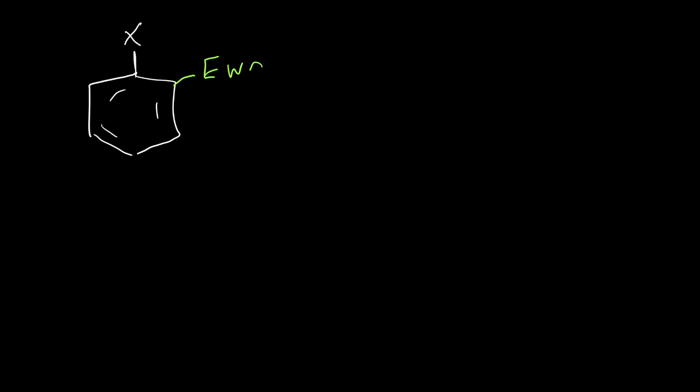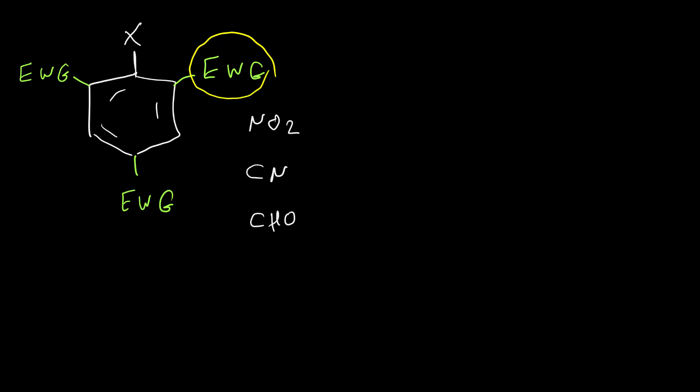Aryl halides can undergo Nucleophilic Aromatic Substitution if they have an electron-withdrawing group on their ortho or para position. This electron-withdrawing group should be a strong one, like NO2, cyanide, or aldehyde. It doesn't need to be three groups — even one group is enough. Groups on the ortho position have more effect, and reactions are easier with an electron-withdrawing group in the ortho position.